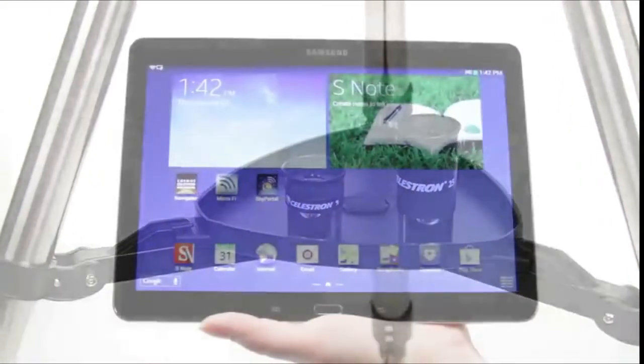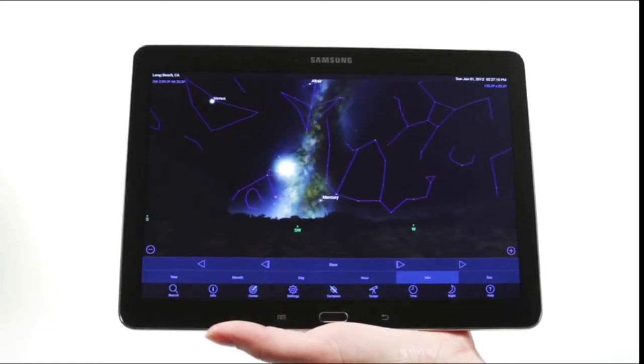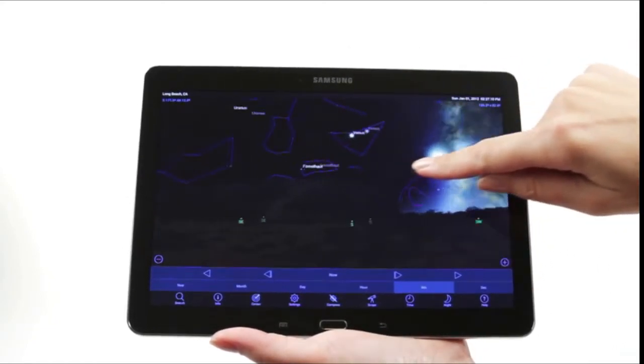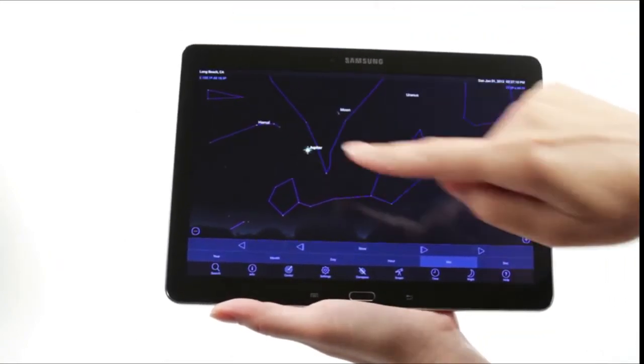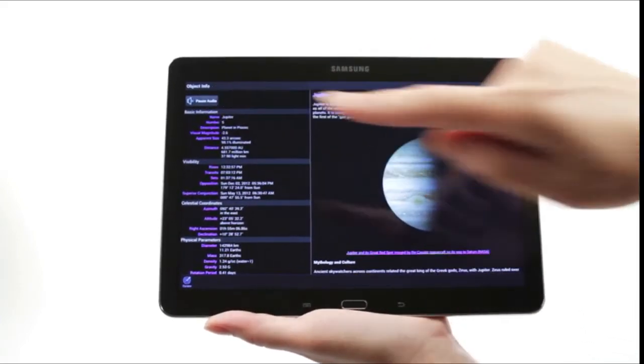When you're out under the stars, use Celestron's free SkyPortal mobile app for iOS and Android to locate objects in the night sky. As you observe, listen to SkyPortal's audio descriptions for the most popular objects. Happy stargazing!